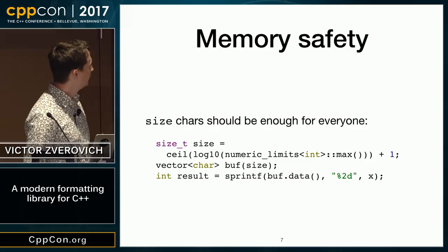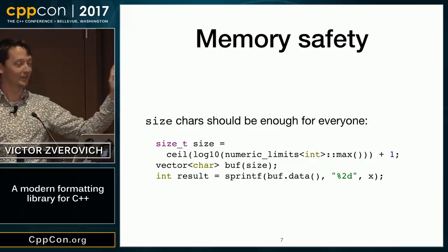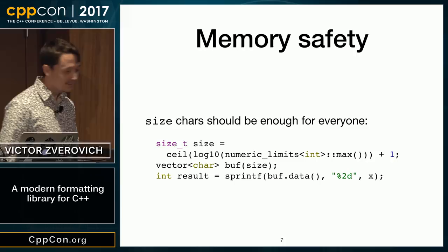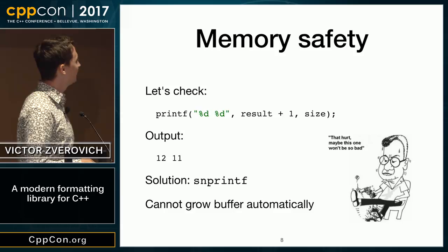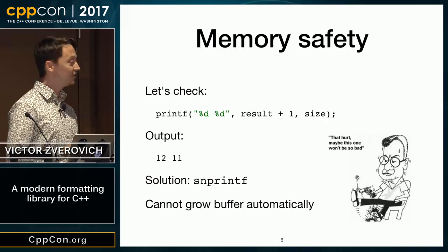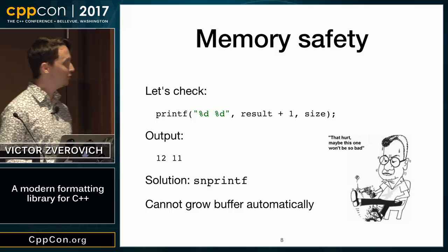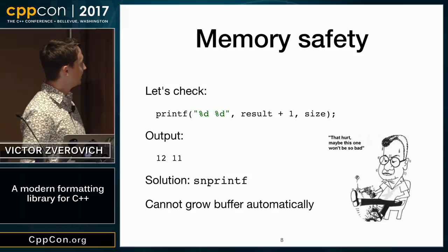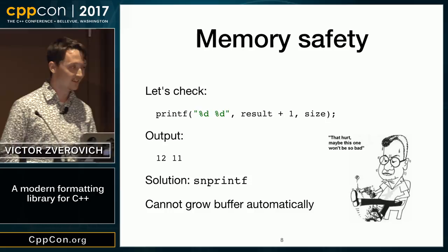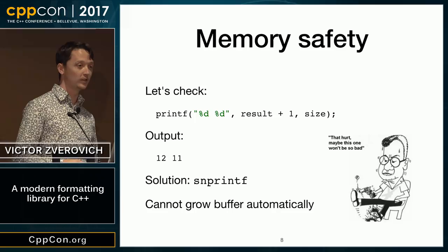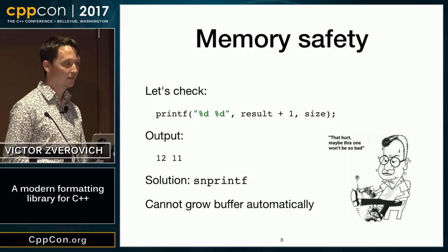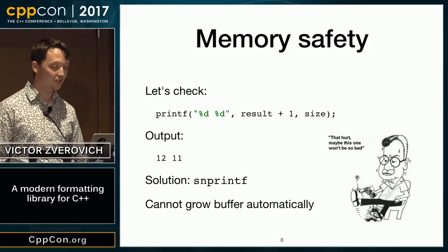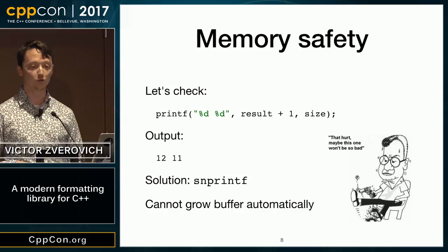This code is incorrect. If we check the result plus one for null terminator against the size, most of the time it will kind of work, but for over a billion integers on a 32-bit platform you'll get output 12-11, meaning you have a buffer overflow. Obviously it will happen for integers less than or equal to minus one billion because we didn't take into account the minus sign. The solution is to use snprintf, but unfortunately it cannot grow the buffer dynamically, so you either need to pre-compute size or overestimate it, which is suboptimal.